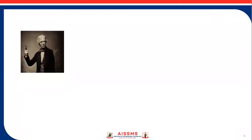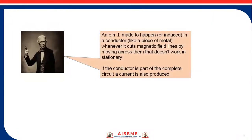Michael Faraday observed that an EMF is induced in a conductor — like a piece of metal — whenever it cuts magnetic field lines by moving across them; this does not work when stationary. If the conductor is part of a complete circuit, current is also produced.